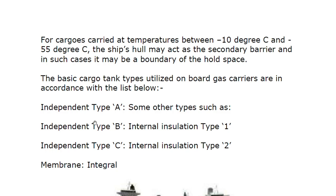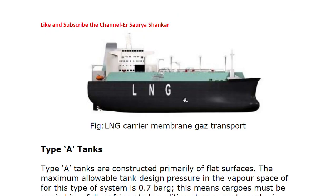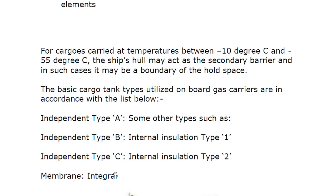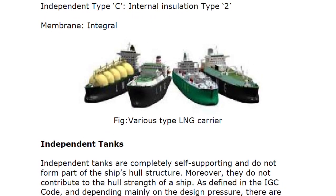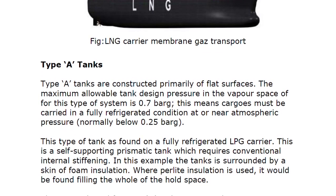The basic cargo tank types utilized on board gas carriers include: Independent Type A, Independent Type B, Internal Insulation Type 1, Independent Type C, Internal Insulation Type 2, and Membrane tanks. Independent tanks are commonly self-supporting and do not form part of the ship's hull structure, nor do they contribute to the hull strength of the ship. As defined in the IGC code, depending mainly on design pressure, there are three types of independent tanks: Type A, Type B, and Type C.